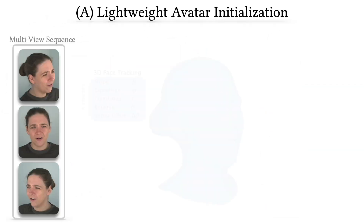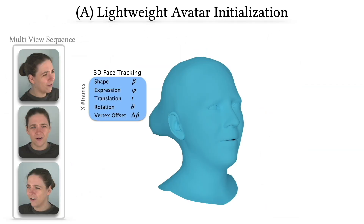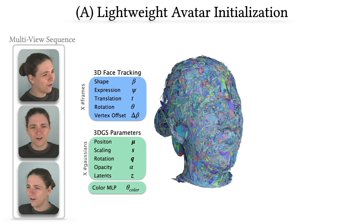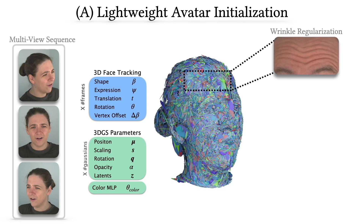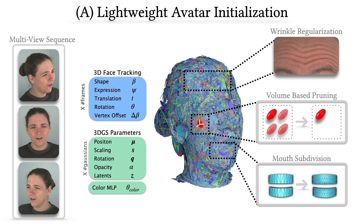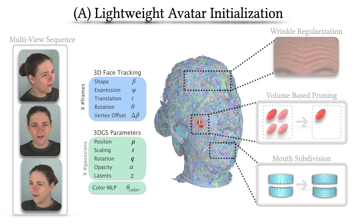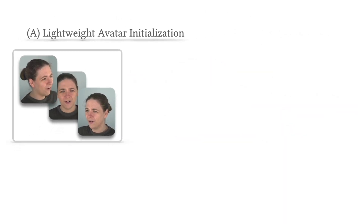For a given multi-view sequence, we first reconstruct its 3DMM tracked parameters. For these tracked meshes, we then learn a lightweight set of 3D Gaussians with latent features and expression-dependent color. We also propose wrinkle and perceptually-based losses to improve the detail and perceptual quality of our avatars with fewer Gaussians.